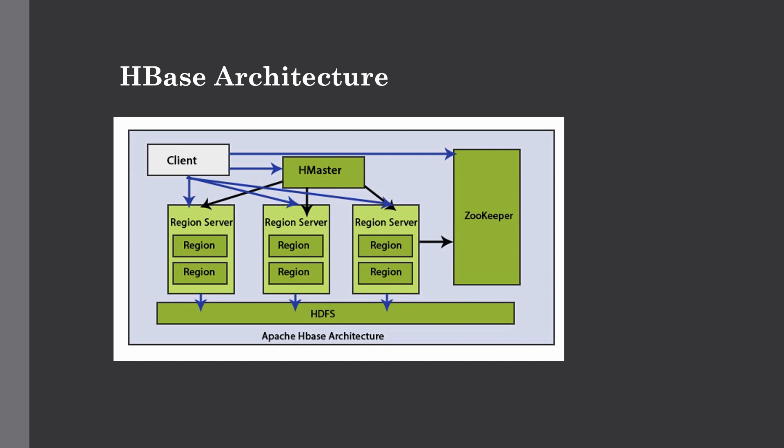That covers the basic overview of how HBase works and the different components of its architecture. For example, a table for a very popular website may contain billions of rows. If you want to search a particular row in such a huge dataset, HBase is the ideal choice, as you can retrieve a record in very little time. Most analytics applications use HBase for this reason, and traditional RDBMS models fail to meet the performance requirements for such huge datasets — limitations that Apache HBase can overcome.